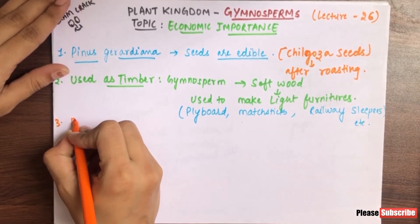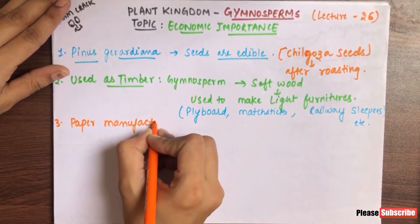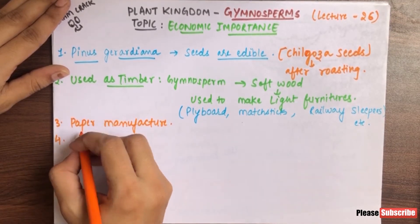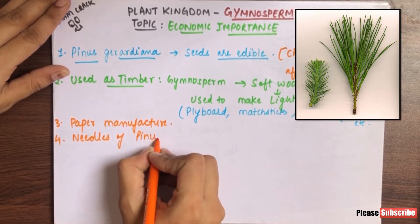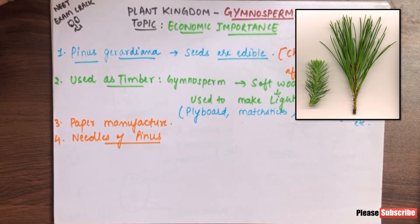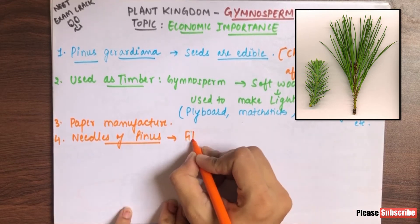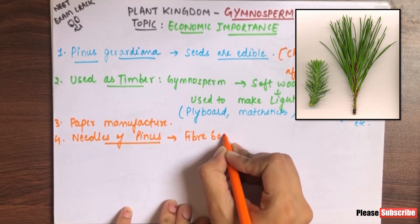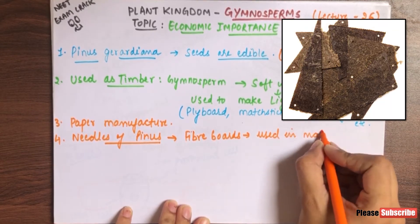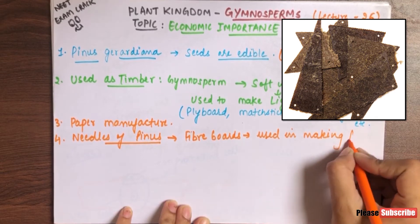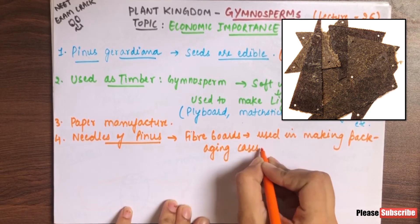Third, gymnosperms are also used in paper manufacturing — there is also a role of gymnosperms in paper manufacturing. Fourth, the needles of Pinus — the leaf of Pinus is needle-shaped, as we discussed in lecture number 23 — these needle-shaped leaves are used to make fiber boards, and they are also used in making packaging cases, packaging for soft furniture, which is softwood.